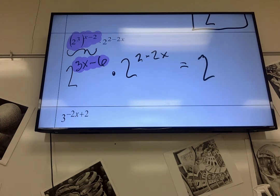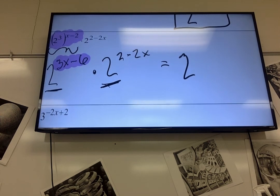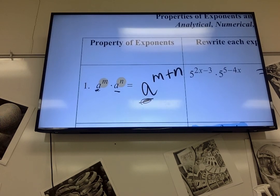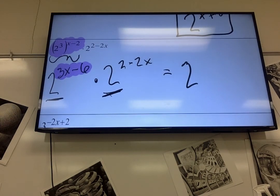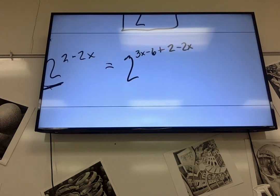Then you are multiplying two with the same basis, so what do we do with the exponents? Add, very good. That goes back to this first one. So we're going to add 3, 3x minus 6, plus 2 minus 2x, adding those and what we get.